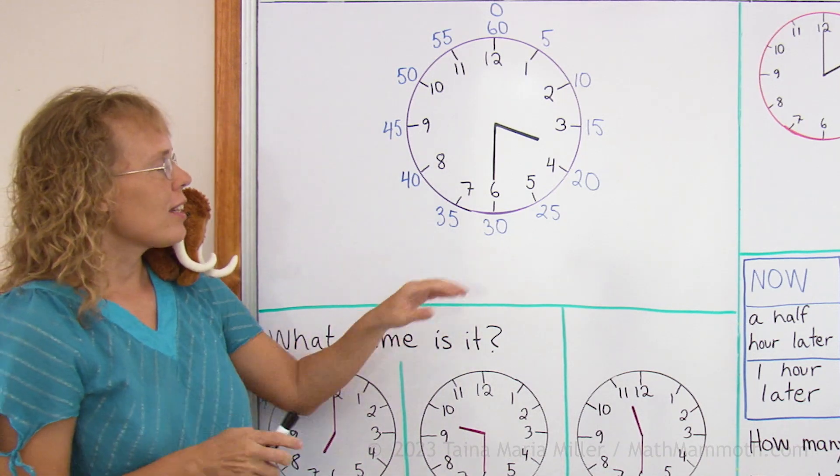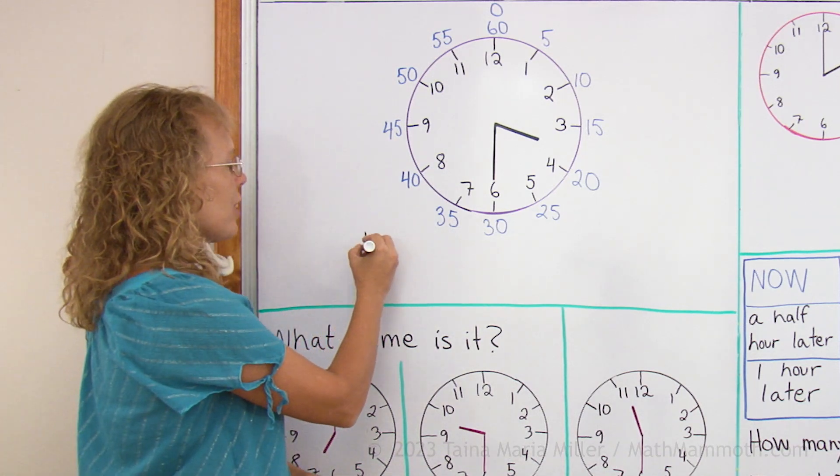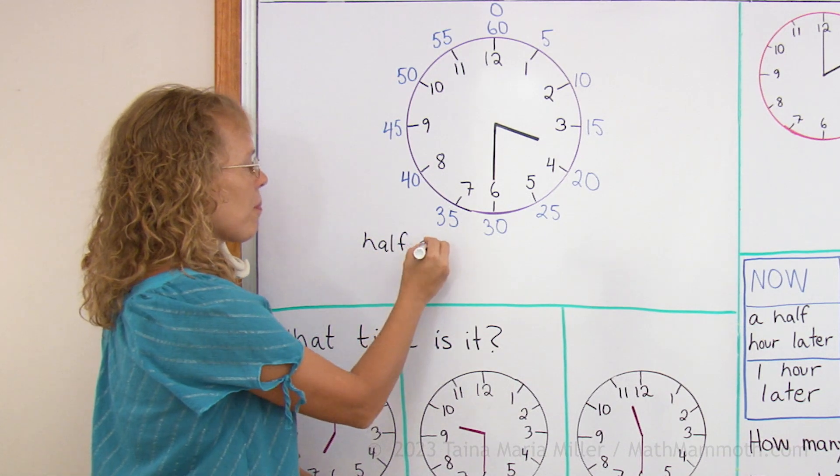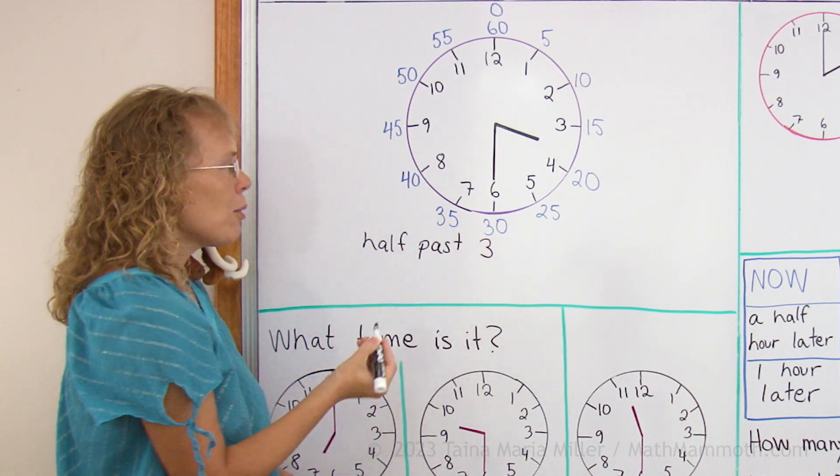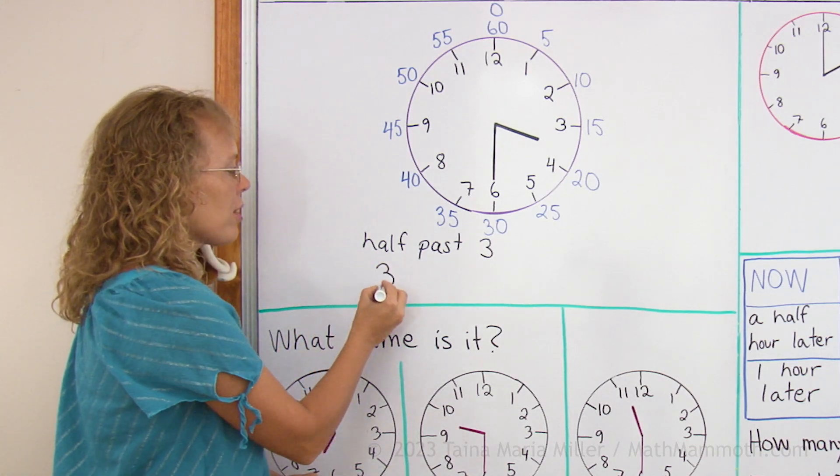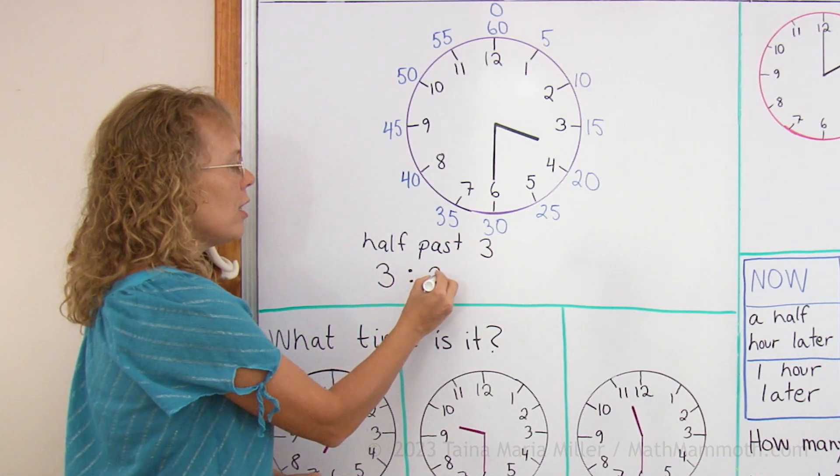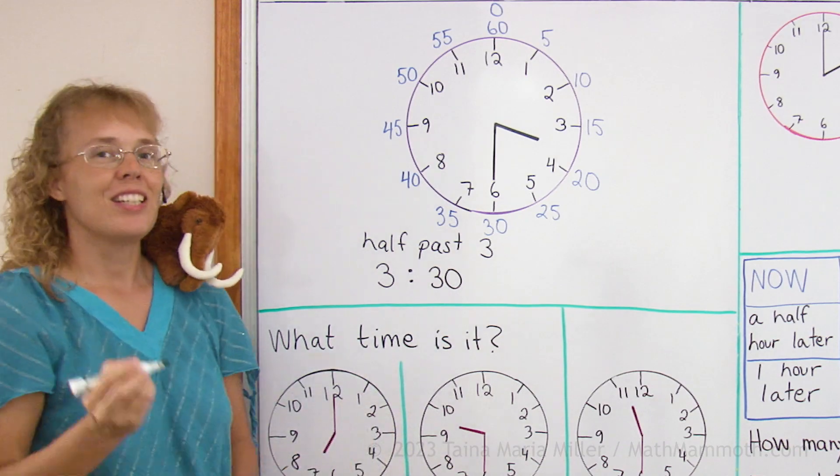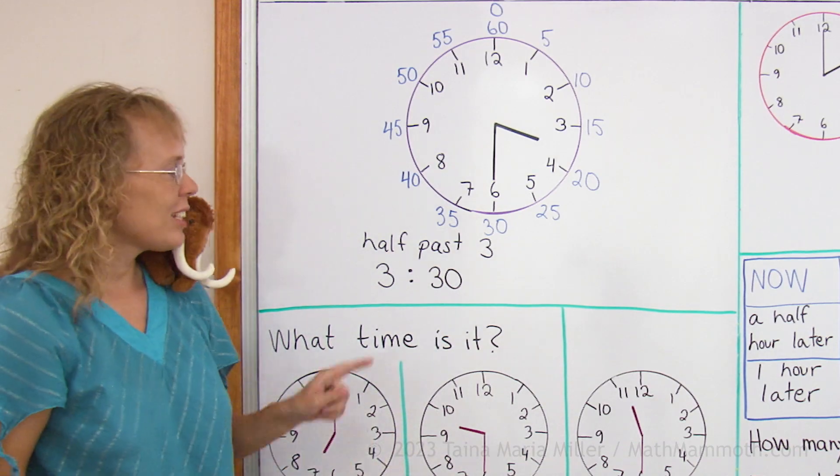We have two ways of saying this time. Half past 3, which you already learned. The other way is to say the hours and the minutes with numbers. 3 hours and then a colon and then the minutes, 30 minutes. 3:30 is how we read it.